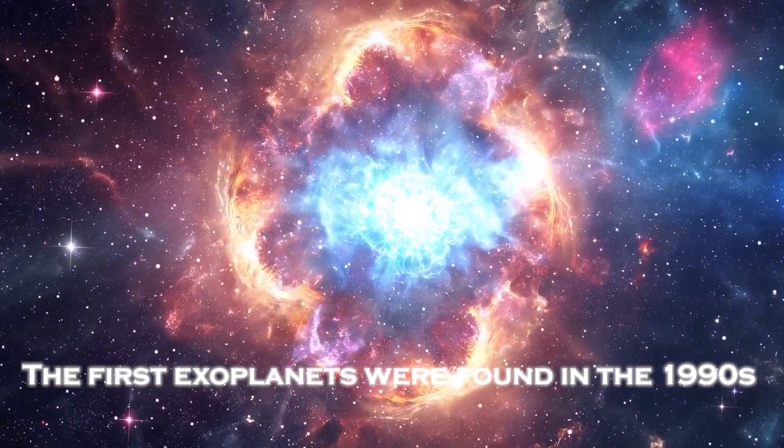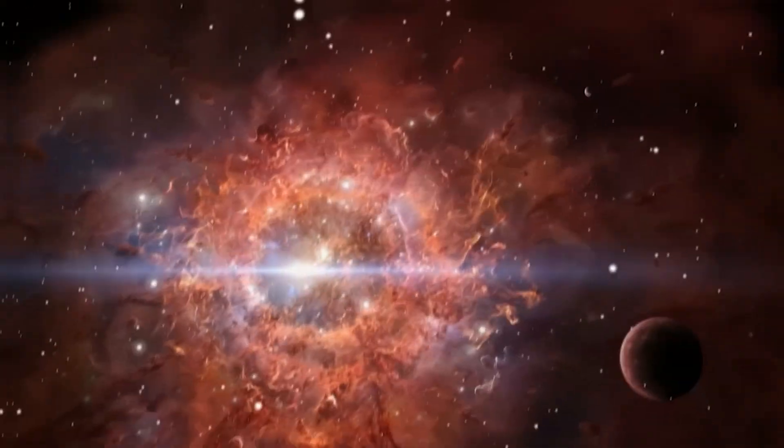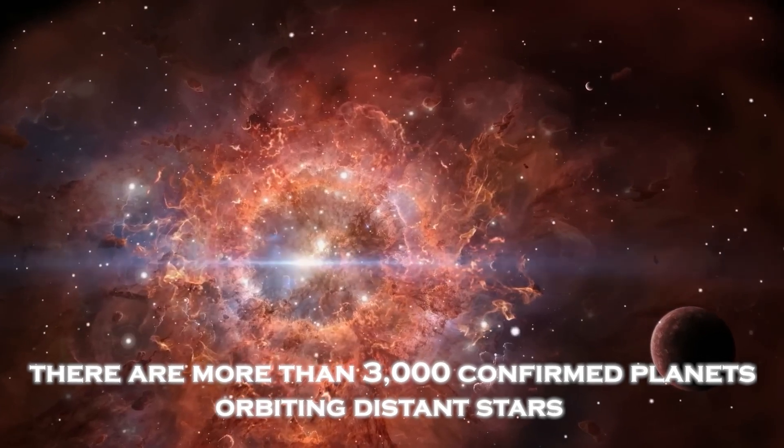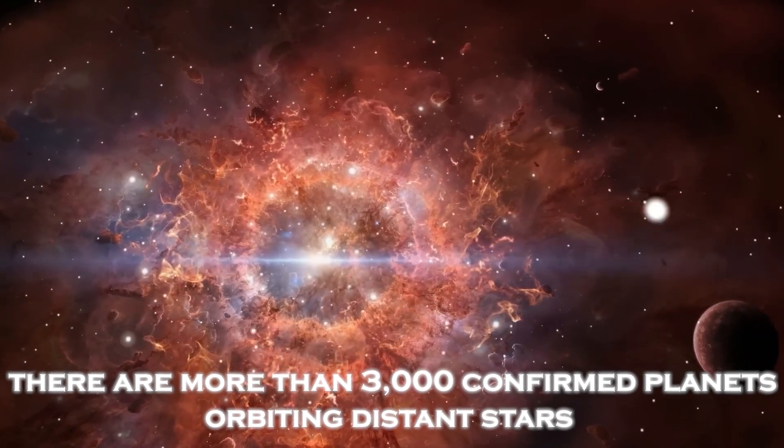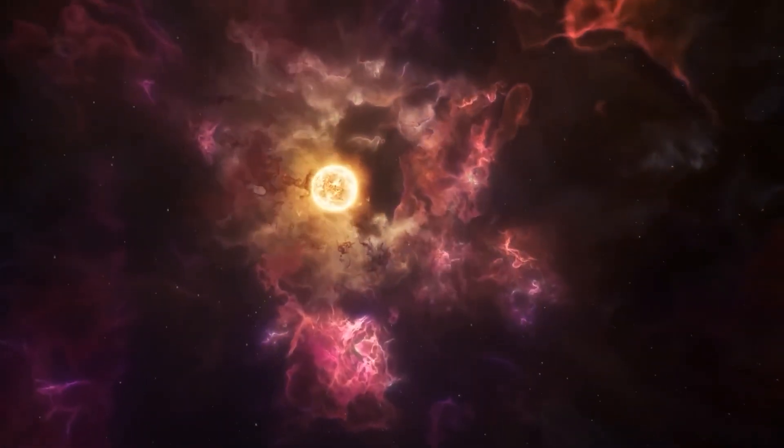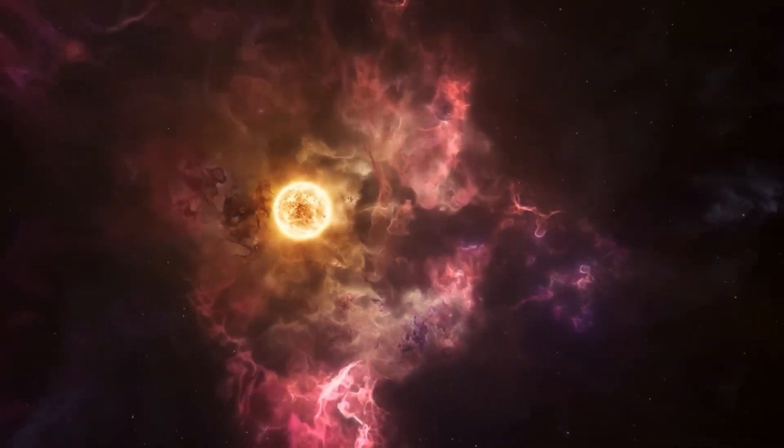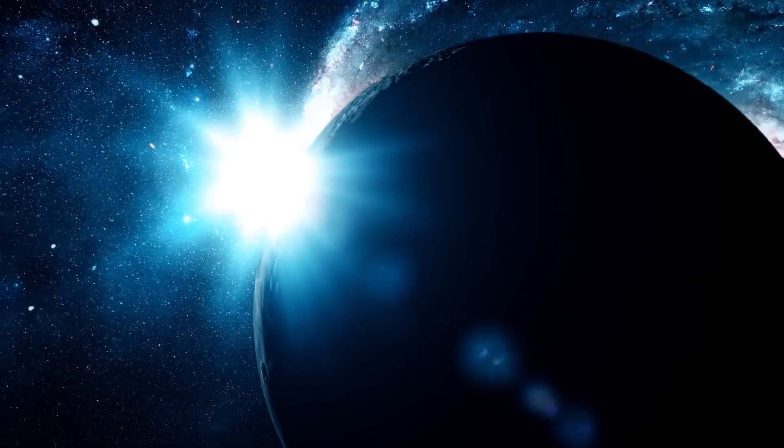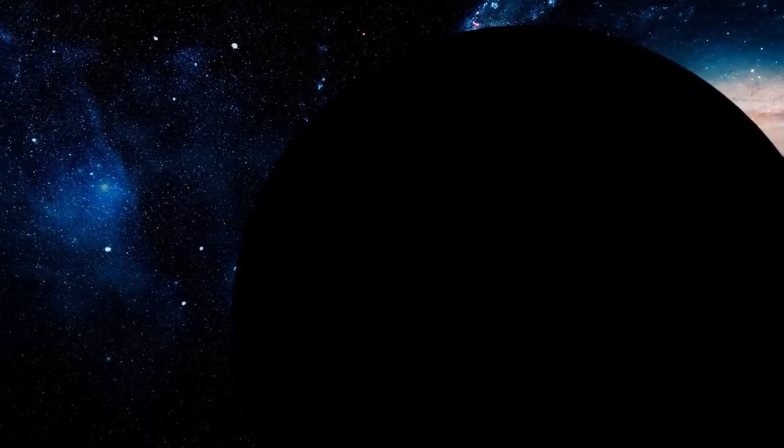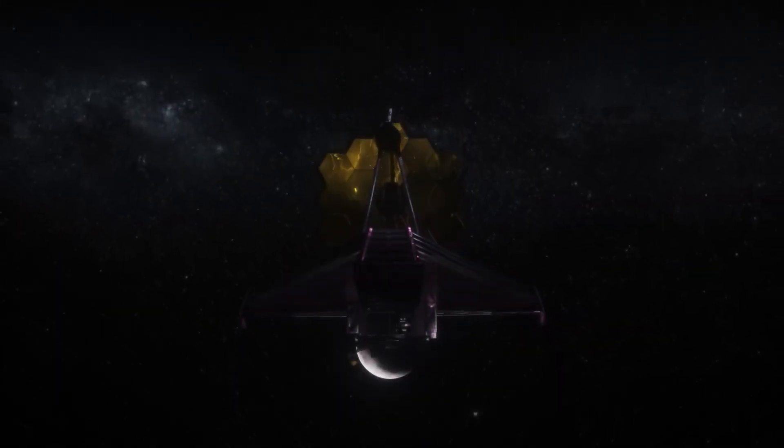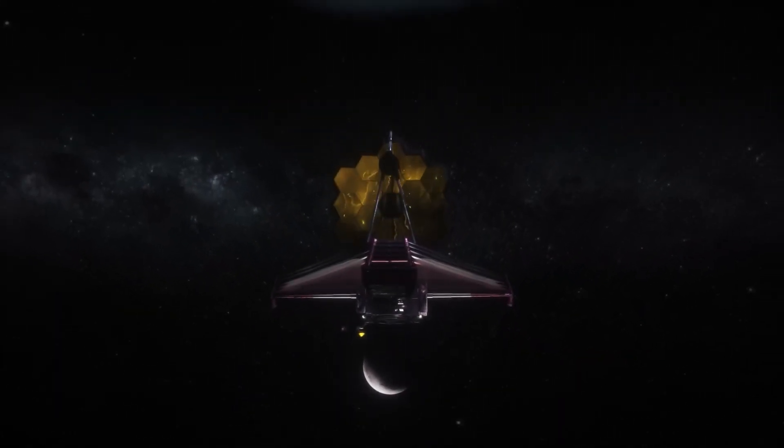The first exoplanets were found in the 1990s, and today there are more than 3,000 confirmed planets orbiting distant stars. However, only a dozen of them have been directly imaged. Most exoplanets are so far away that they can only be detected when the light from their host star is dimmed. The first direct image of an exoplanet was taken in September last year.